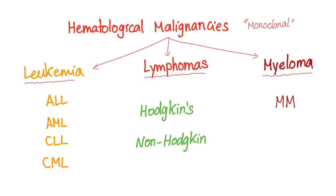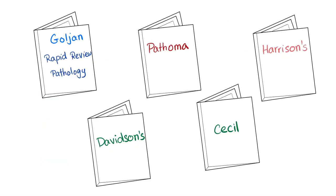As you know, hematological malignancies are leukemias, lymphoma, and myeloma. Here are the books that I use. If you are a medical student, I strongly recommend this book and this one — see the link in the description.